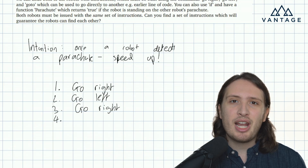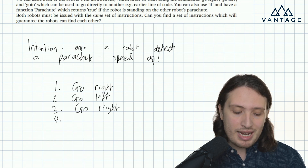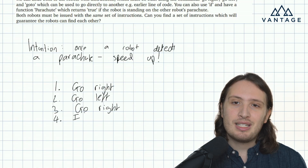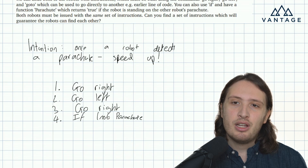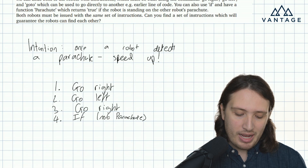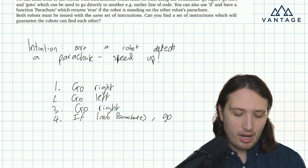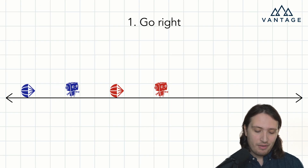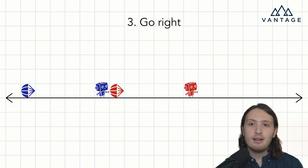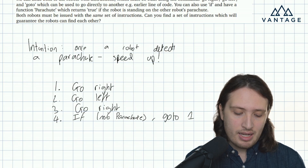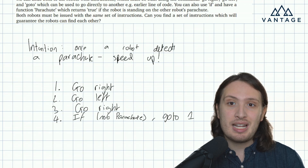Now, what do I want to do in terms of checking for the parachute? If I don't meet the parachute, I want to repeat this — keep going more slowly. So I say: if not parachute() — parachute() returns true if I find it, and not negates it — then go to line one. So if I haven't found the parachute, I go back and keep looping through this slow-movement block. But if I do find the parachute, I don't trigger that go to, and I get to move on to the next block of code.